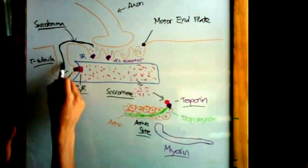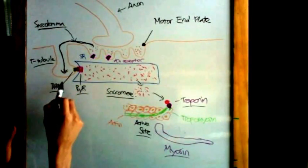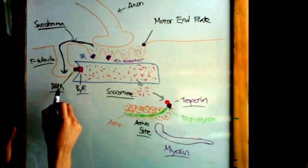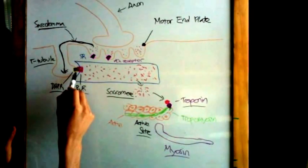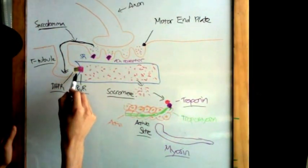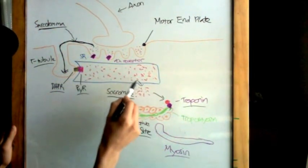At the end of the T-tubule, there is a dihydropyridine receptor that controls the opening of a ryanodine receptor located on the sarcoplasmic reticulum. The job of the ryanodine receptor is to release calcium ions from the SR.